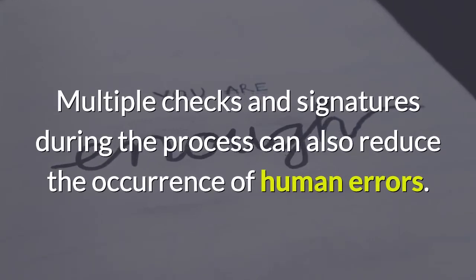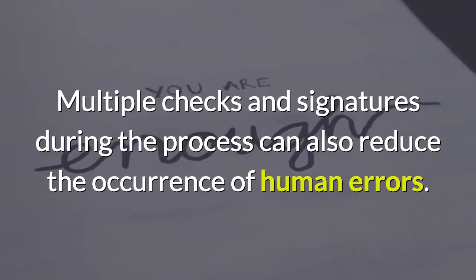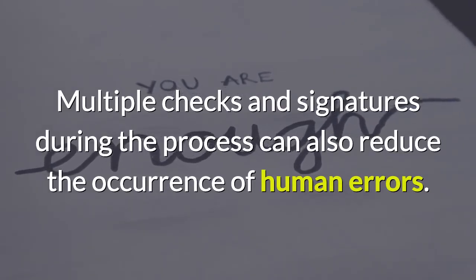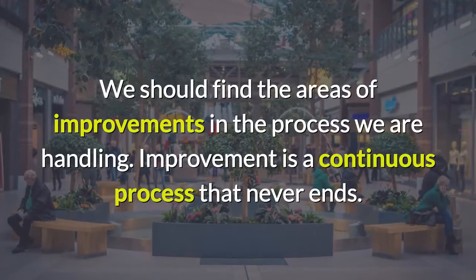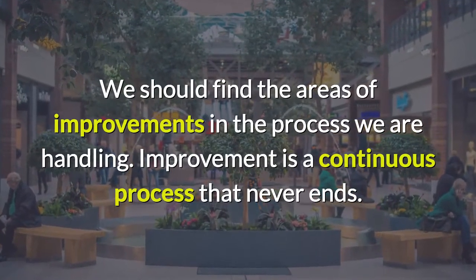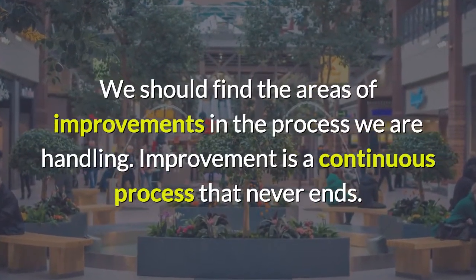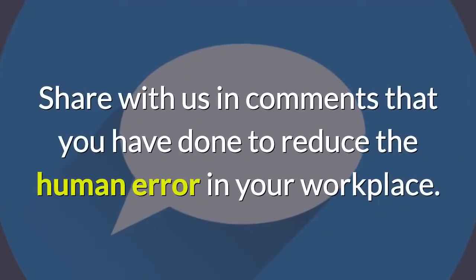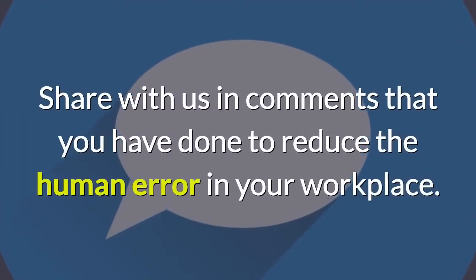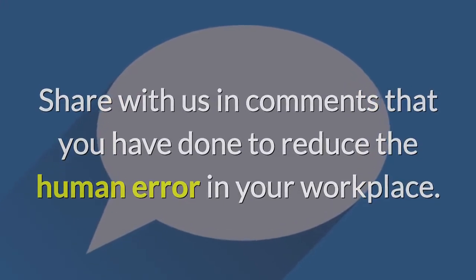Multiple checks and signatures during the process can also reduce the occurrence of human errors. We should find the areas of improvement in the process we are handling. Improvement is a continuous process that never ends. Share with us in the comments what you have done to reduce human errors in your workplace.